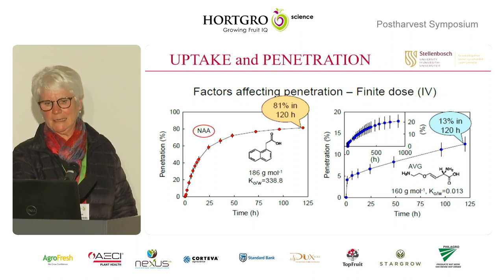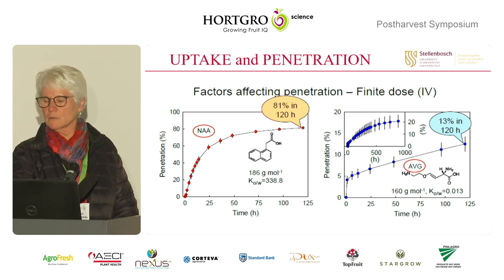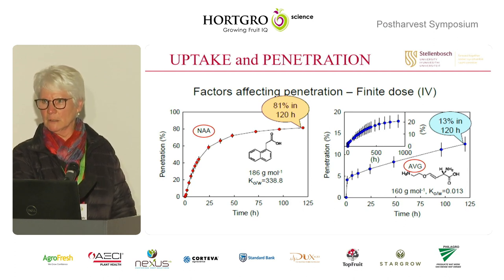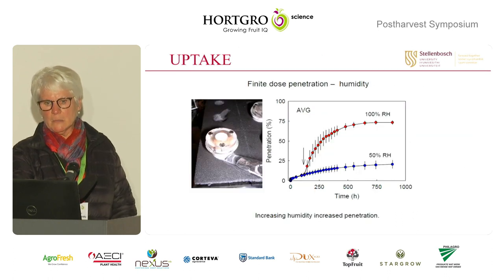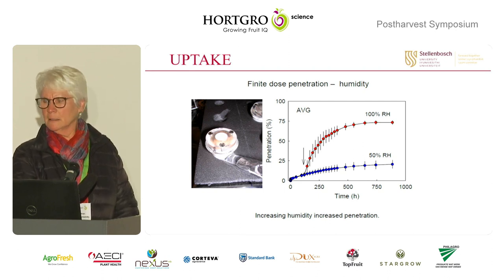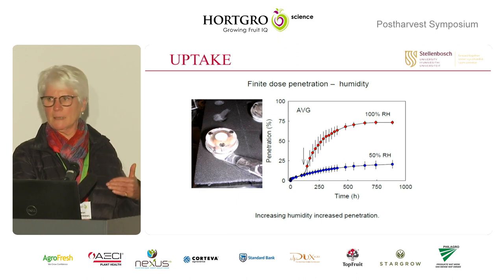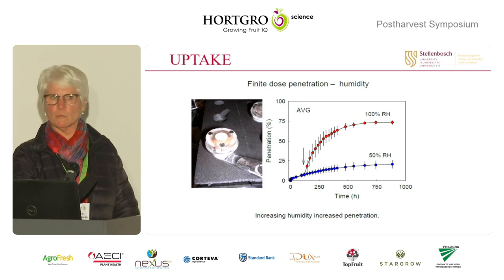Valent has done a lot of work on the formulation to improve absorption. By comparison, NAA achieves 81% uptake after 120 hours, whereas Retain is at only 13% after the same time — it's a very difficult molecule to absorb. Absorption is strongly influenced by humidity: at 50% humidity uptake is low, but at 100% relative humidity uptake improves significantly. So when making the application, you need high relative humidity in your orchard, otherwise you're wasting money.